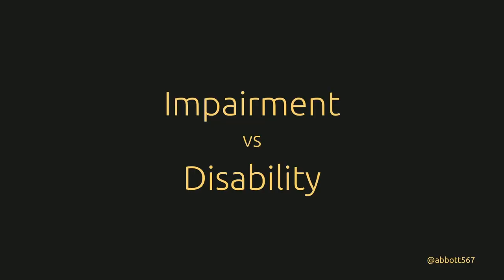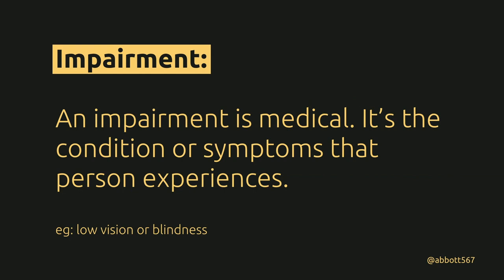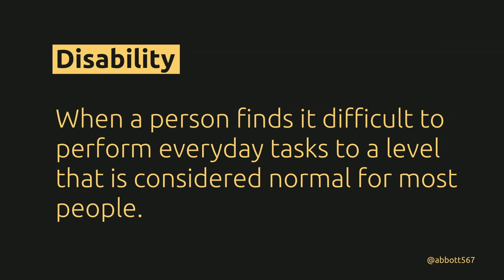An impairment and a disability aren't the same thing. An impairment is medical — it's the condition or symptom a person experiences, the part of your body that might not work properly. So if you've got glaucoma, your eyes might not work properly — you've got a visual impairment. But it's important to remember that having an impairment doesn't necessarily mean you're disabled. Disability is when a person finds it difficult to perform everyday tasks to a level considered normal for most people.